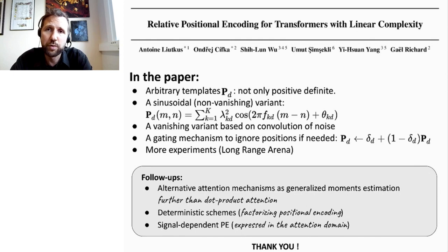So to summarize we propose relative positional encoding for transformers with linear complexity. And in the paper you have much more content. We allow for arbitrary Toeplitz not just positive definite ones. We have two variants, one is vanishing with a convolution of noise, one is non-vanishing with sinusoids. We have a gating mechanism also to ignore positions and we have much more experiments. So as a follow-up we could imagine an alternative to dot product attention, just factorizable positional encoding or signal dependent positional encoding. Thank you very much.